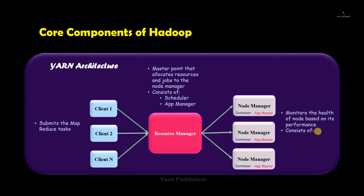These nodes are containers in which resources are actually working and processing the data. The node manager keeps track of the health of each node based on its performance — whether it is executing or failing a task — and updates this information to the resource manager. The node manager also consists of the application master, which is responsible for negotiating resources with the resource manager and tracking the status and progress of each application running inside the container. The container itself represents all the resources — such as RAM or CPUs — running on a single node, and containers always run under the node manager.